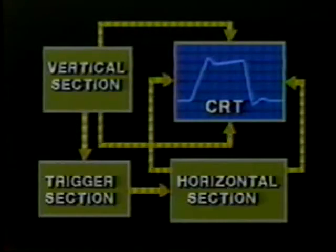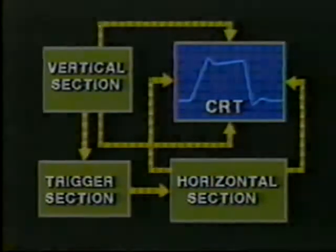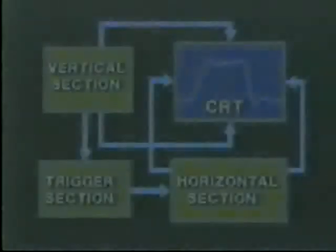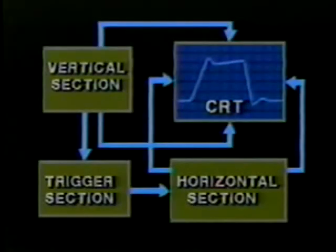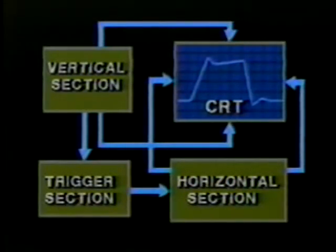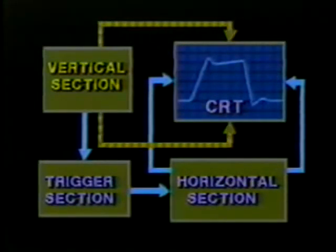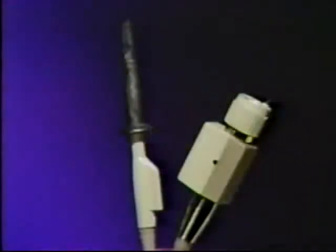Any signal we connect to the oscilloscope follows a path through the vertical and horizontal circuitry on its way to the CRT display. The oscilloscope can be divided into two sections: the vertical and horizontal sections. In this part of the tape we'll take a closer look at the signal path through the vertical section. Source signals are connected to oscilloscopes through probes or through coaxial cables.